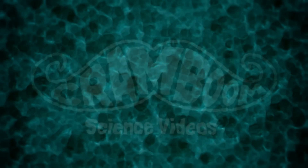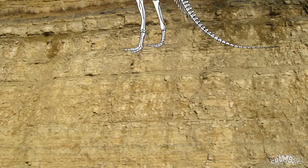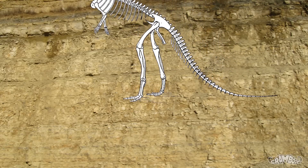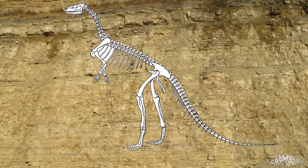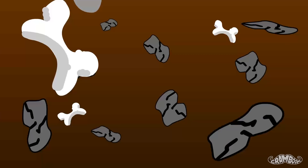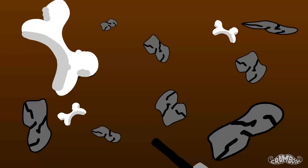How do fossils form? They're not just bones that end up underground waiting to be dug out. Well, they kind of are. The word fossil itself comes from the classical Latin word fossilis, which means obtained by digging. But as we know, some fossils can be obtained without digging.